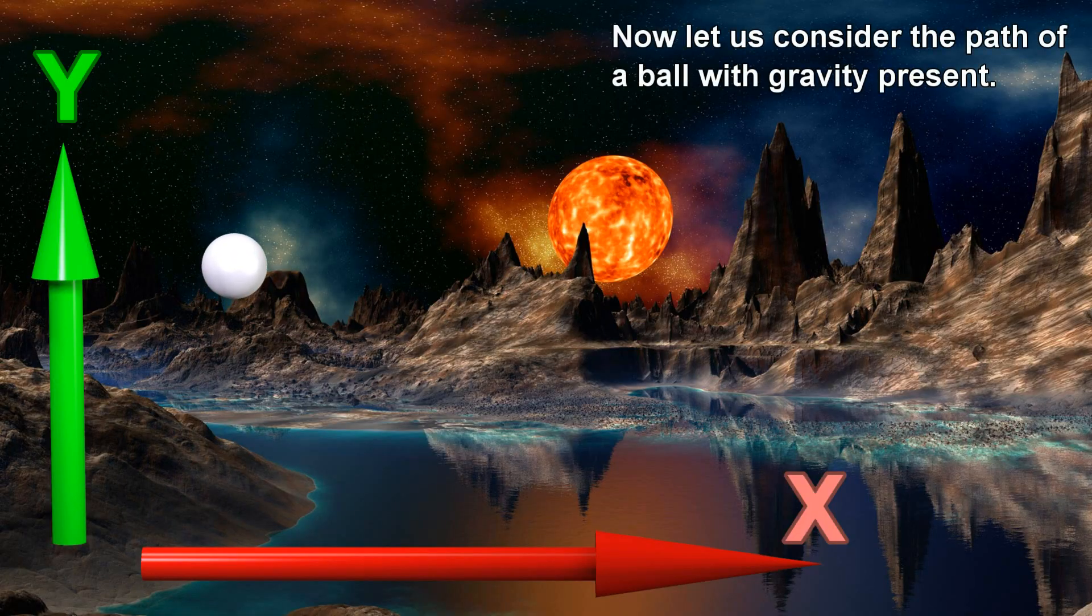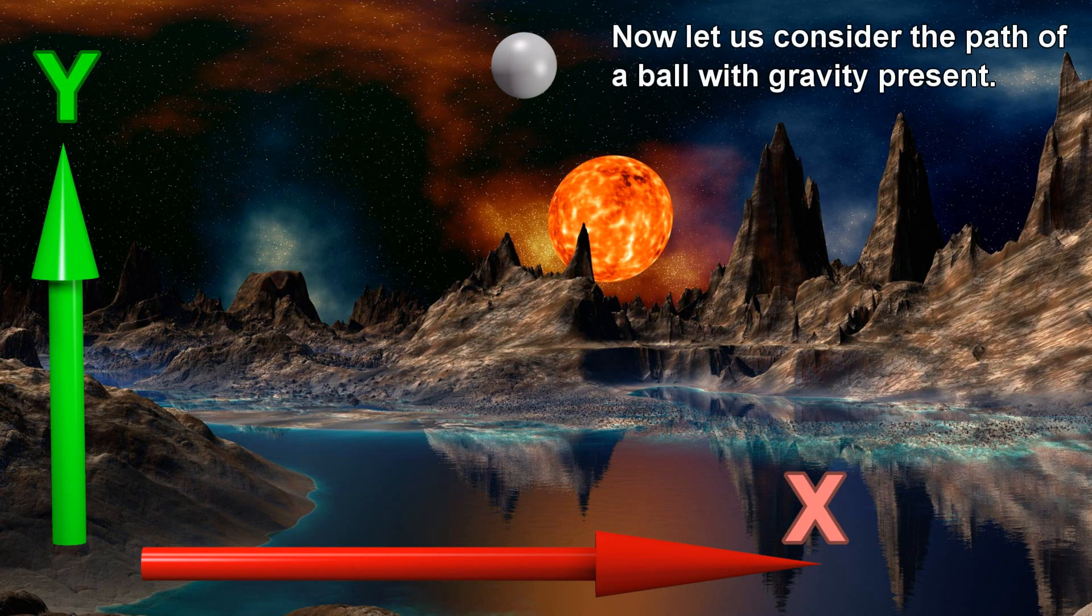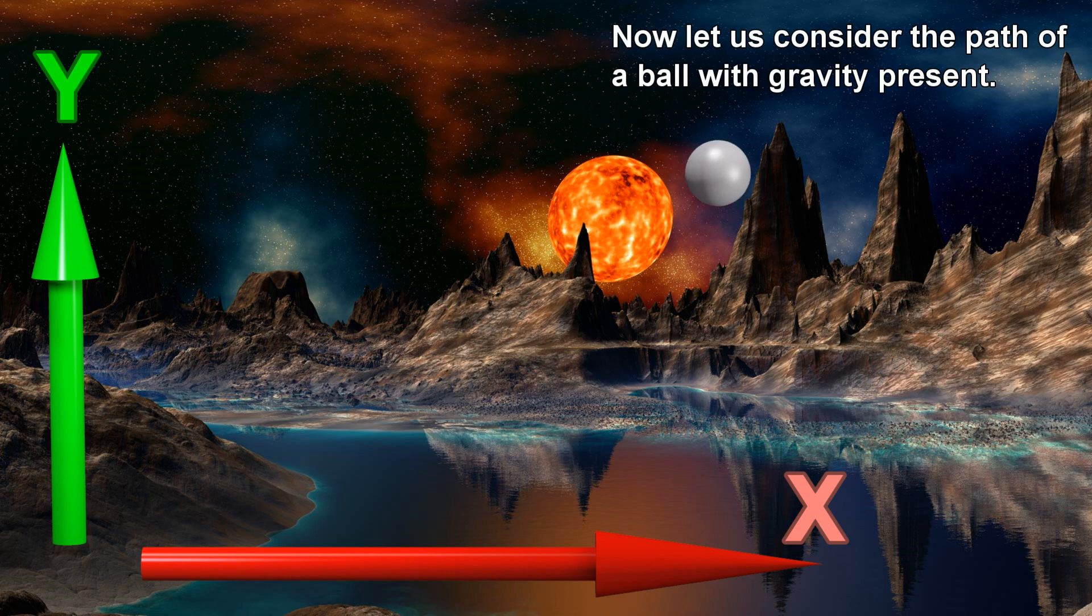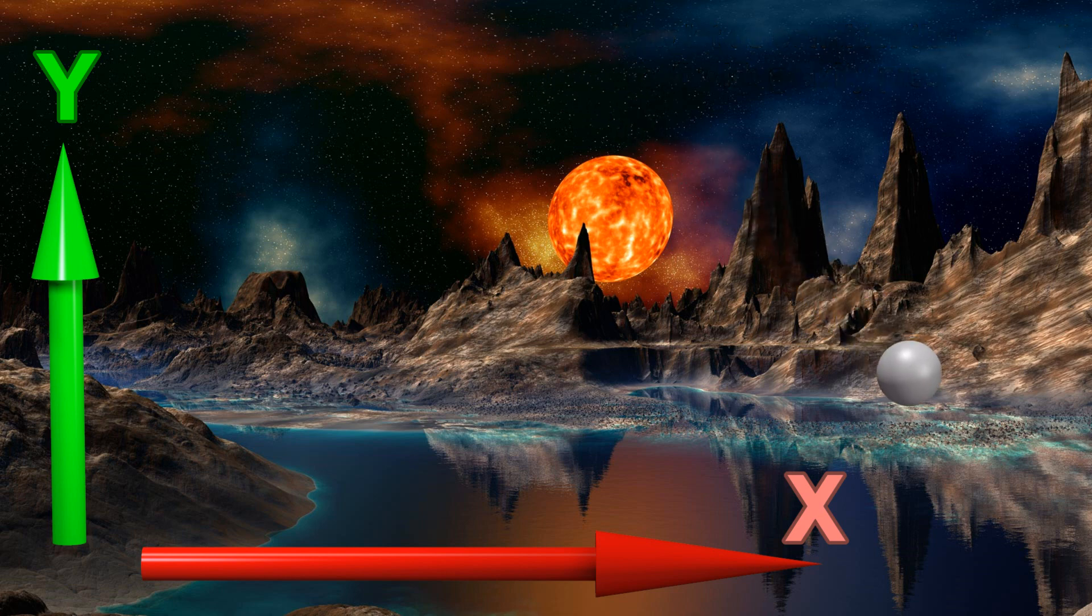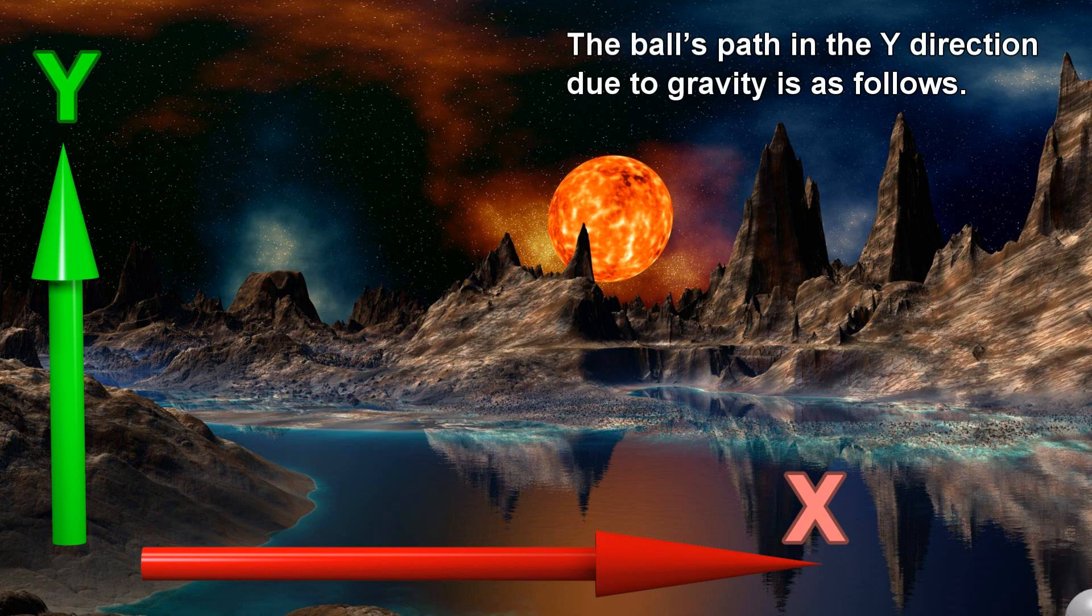Now let us consider the path of a ball with gravity present. The ball's path in the y-direction due to gravity is as follows.